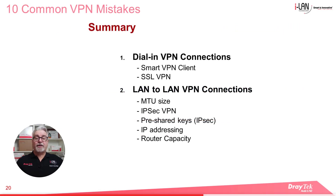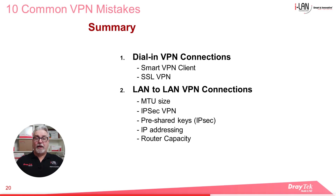To summarise, today we looked at some common issues with dial-in VPN connections, which includes the Smart VPN client and SSL VPN. We also looked at some common issues encountered with LAN-to-LAN VPN connections, which included MTU size and some VPN settings, and how WAN IP address can affect incoming VPN connections. Also, how router VPN capacity is affected by the model number. For more tips to improve VPN connections, check out our knowledge base. I'll include some links below as well.